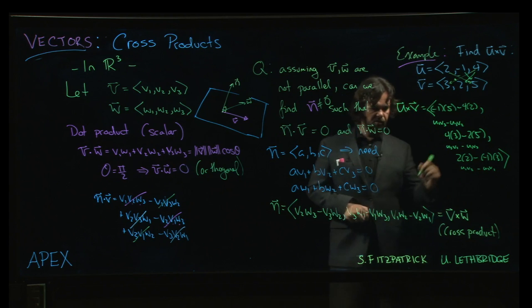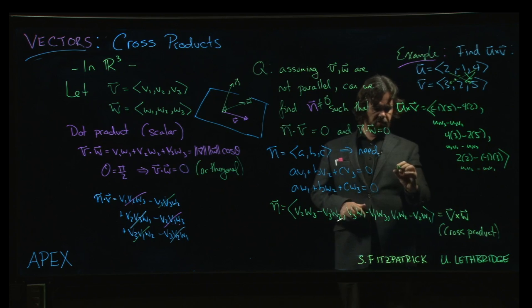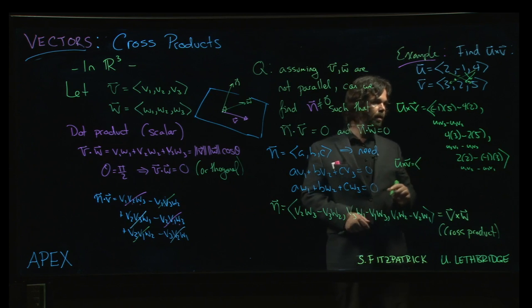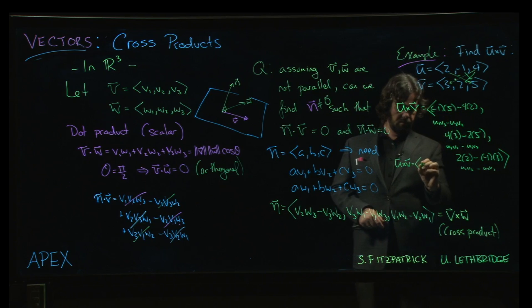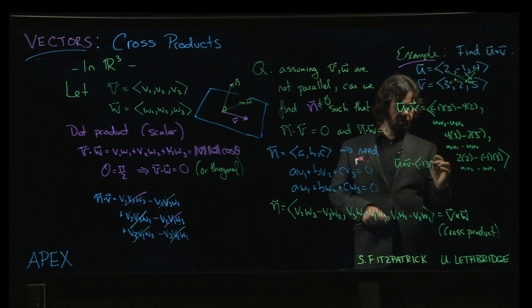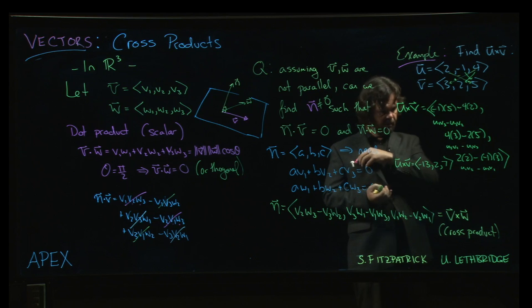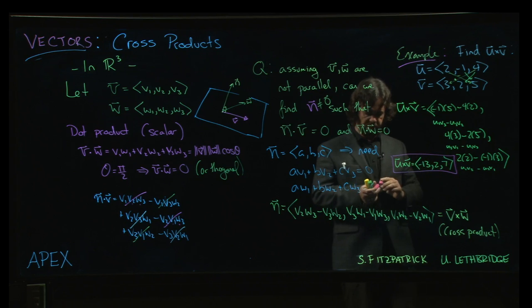Okay, so let's do the arithmetic and work out what do we actually have here. So u cross v, when we clean it all up, minus 8 minus 5, minus 13. 12 minus 10 is 2. And then 4 plus 3 is 7. Okay, so that's my cross product, minus 13, 2, 7.